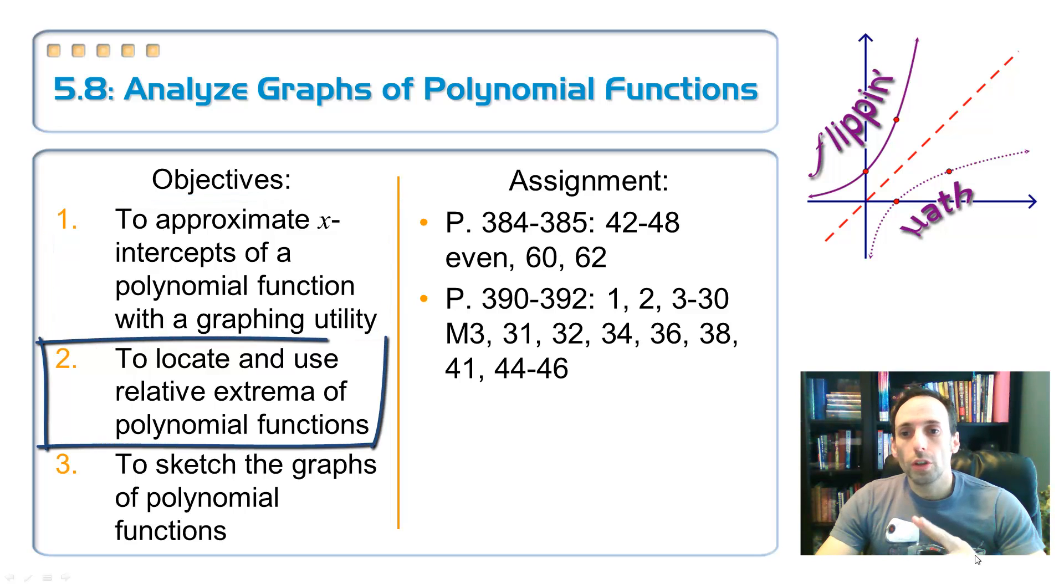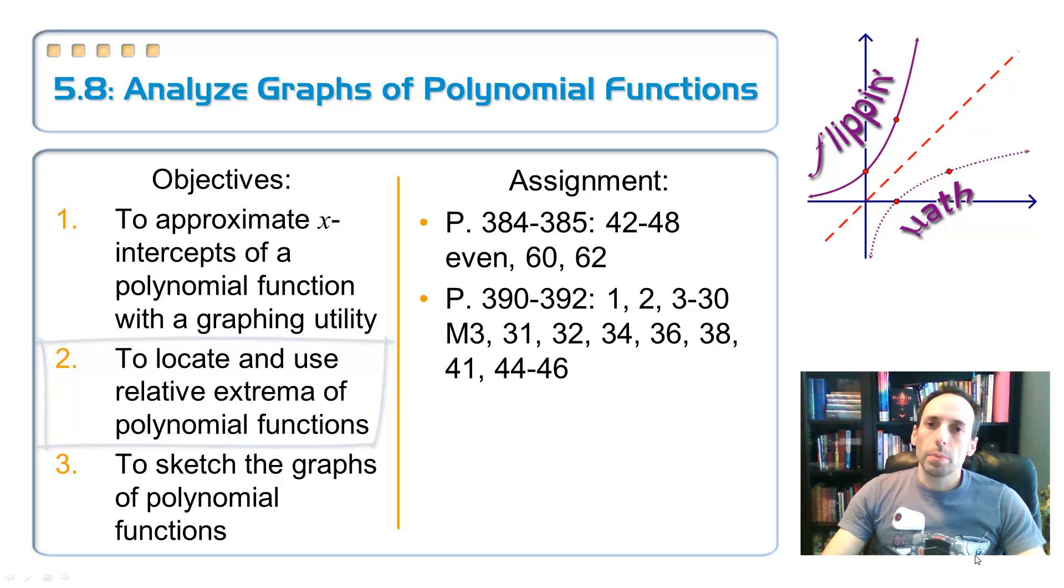Number two, we're going to use the calculator again. We're going to locate this stuff called local minimums and maximums, usually called relative extrema. That's like some calculus terminology of polynomial functions. Like, where does it go? How high does it go? How low does it go?